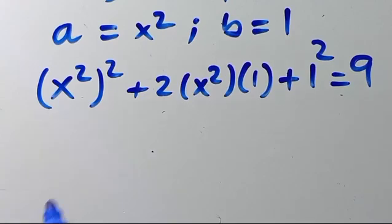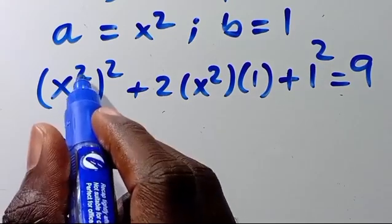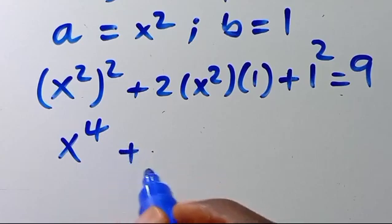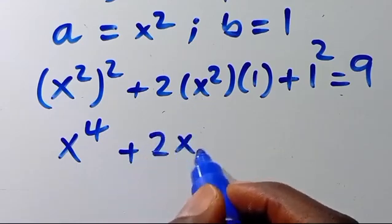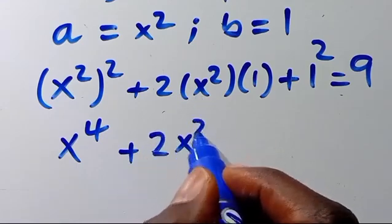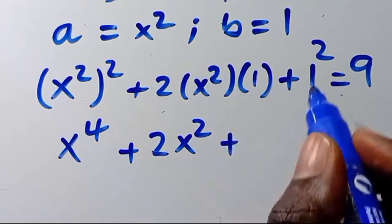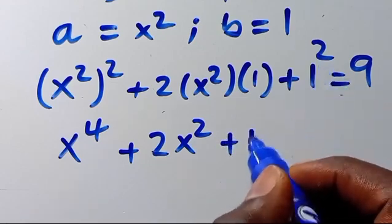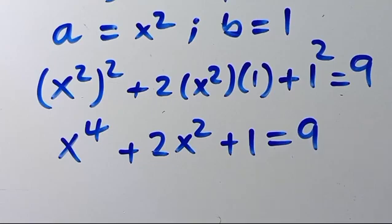So from here we have 2 times 2 will be 4. So we have 2 times x squared plus 1 to the power of 2 equals 9.